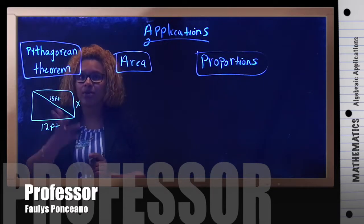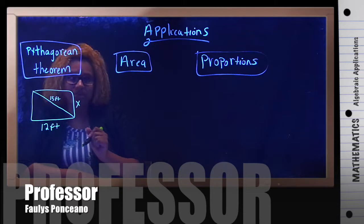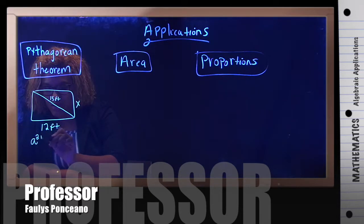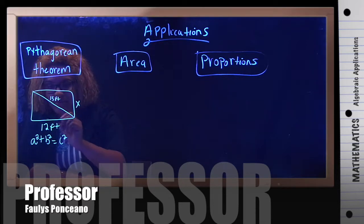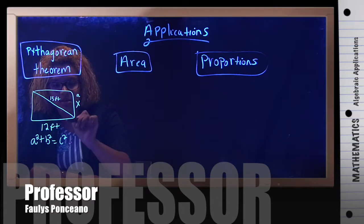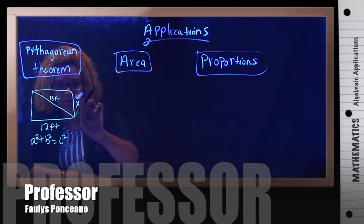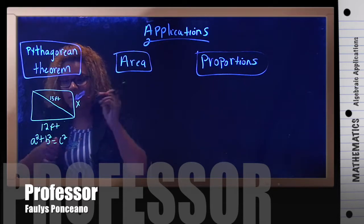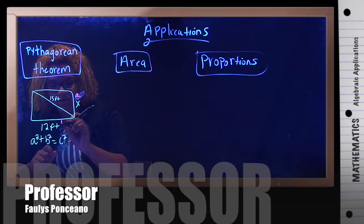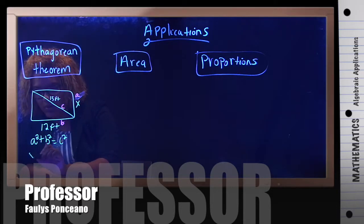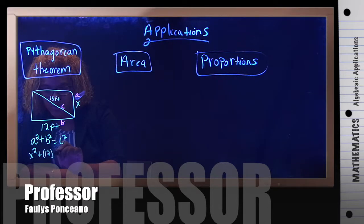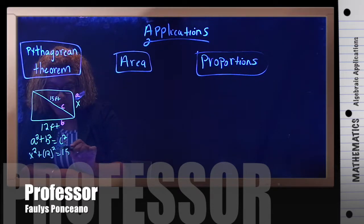So we're going to use Pythagorean Theorem. The formula for Pythagorean Theorem is a squared plus b squared equals c squared. So I have a, this is my a, b, and c. So what I don't know is a. So x squared plus 12 squared equals 15 squared.